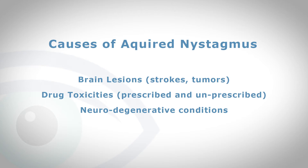The most common causes of acquired nystagmus are brain lesions such as stroke or tumors. Drug toxicities also occur, whether it's prescribed drugs such as anticonvulsants or unprescribed drugs such as alcohol. And some people have neurodegenerative conditions where things gradually get worse and worse, and often these are inherited as well.